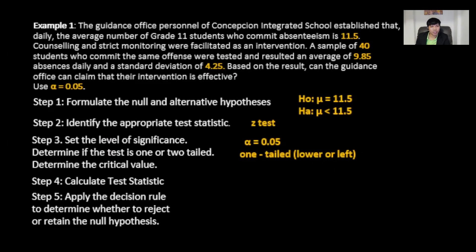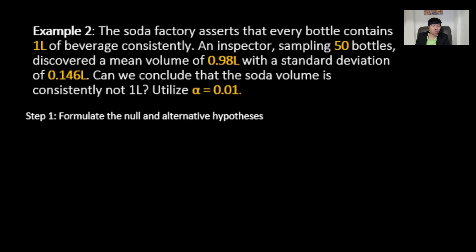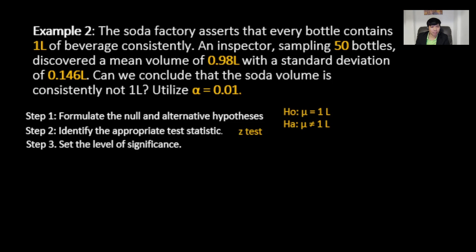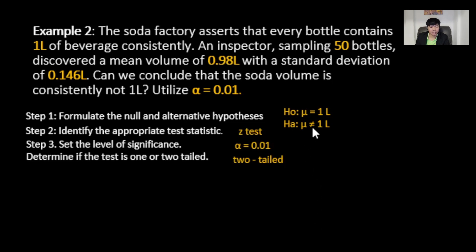Example number 2: a soda factory asserts that every bottle contains 1 liter of beverage. An inspector sampling 50 bottles discovered a mean volume of 0.98 liters with a standard deviation of 0.146 liters. Can we conclude that the soda volume is consistently not 1 liter? Use alpha equals 0.01. The null hypothesis is mu equals 1 liter, and the alternative hypothesis is mu not equal to 1 liter. It's a two-tailed test because the volume could be lower or higher than 1 liter.